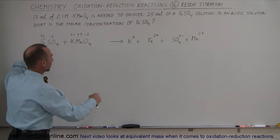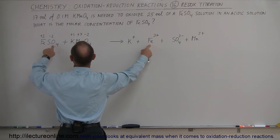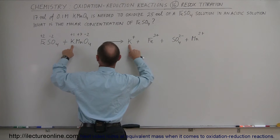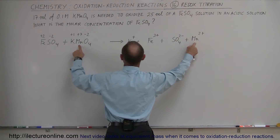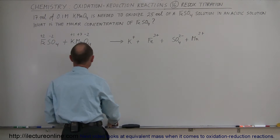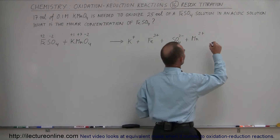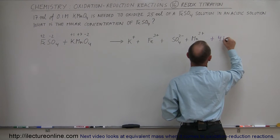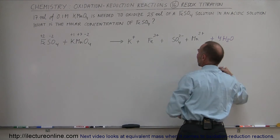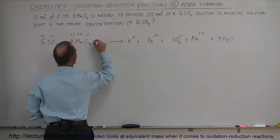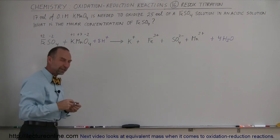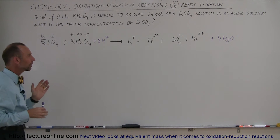First of all, we have one iron on each side — that's good. We have one sulfate ion on each side — that's good. One potassium, one potassium; one manganese, one manganese — so far so good. We have four oxygens here, so what we want to do on the right side is add four waters, plus four H₂O. Now we've balanced the oxygen, but now we have eight hydrogens, so on this side we want to add eight hydrogen ions. So now the equation is at least balanced for all the elements.